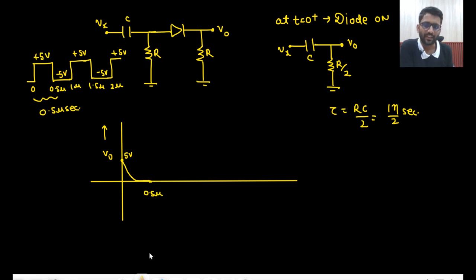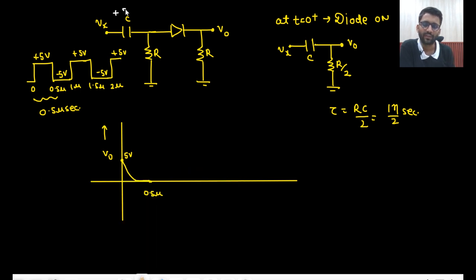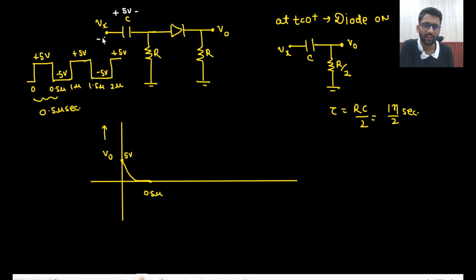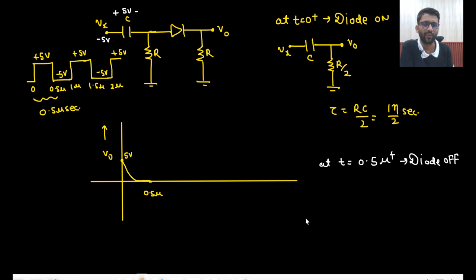Now this capacitor has been charged to 5 volts at steady state. Now what will happen — minus 5 will come here. So minus 5 at Vx and minus 5 across the capacitor gives minus 10, so this diode will be off. At T equals 0.5 microseconds plus, diode will be off because minus 5, minus 5 equals minus 10 — diode will be off.